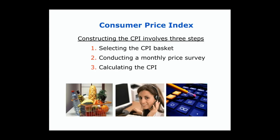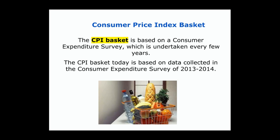The way we calculate the Consumer Price Index is: first, select the basket of goods and services that are representative; then calculate the price of that basket in the base year; then do a monthly survey of prices for all those baskets, which enables us to calculate the CPI each month and year going forward. The basket is based on a consumer expenditure survey — we want to know what representative things people are spending their money on: housing, food, medical care, clothing. The basket is updated and weighted based on a consumer expenditure survey, the last one done in the 2013–14 timeframe.